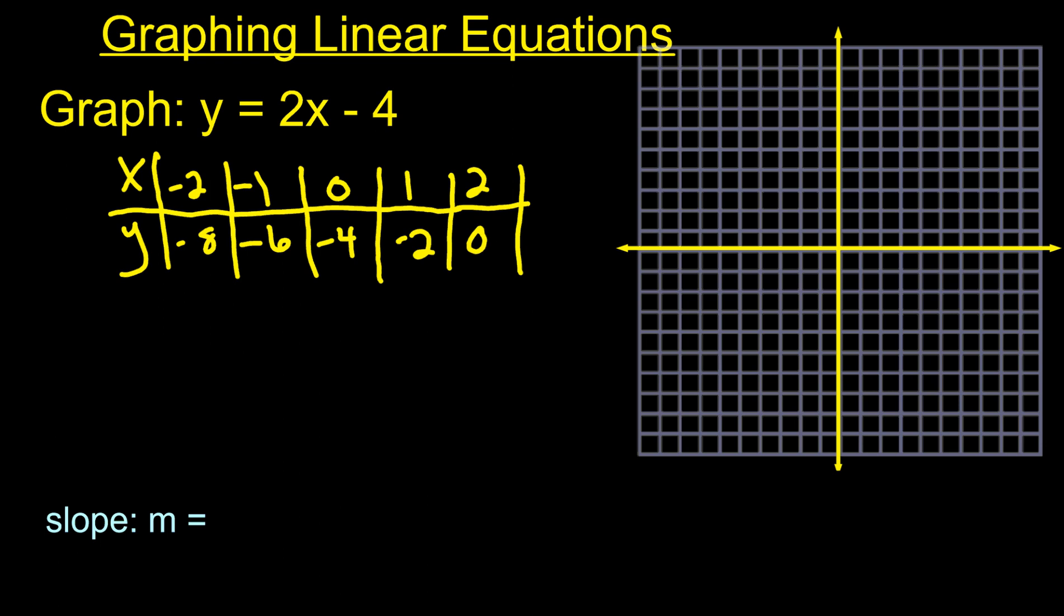So then you go through and you graph all of these points. So negative 2, negative 8. Negative 1, negative 6. 0, negative 4. 1, negative 2. 2 is 0. And you notice they kind of all go with the same pattern. You keep going up 2 over 1, up 2 over 1, up 2 over 1. And you just keep drawing a bunch of points on there.